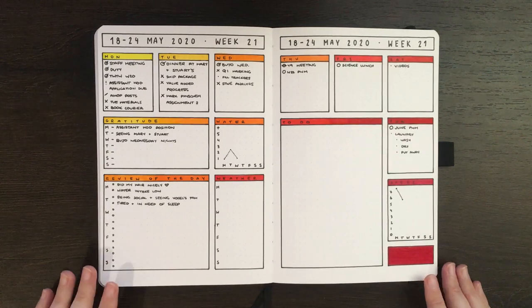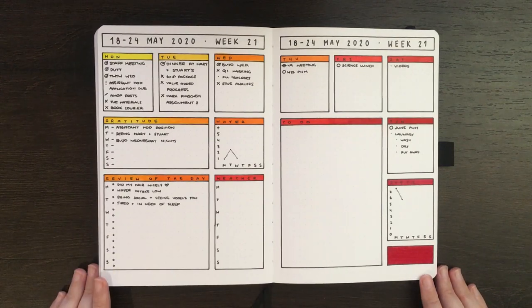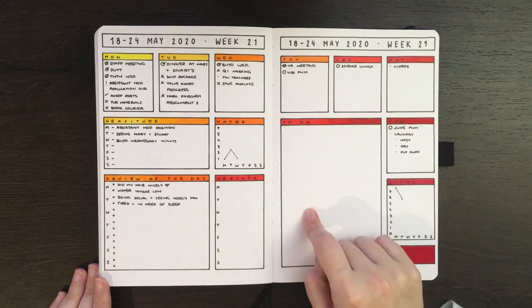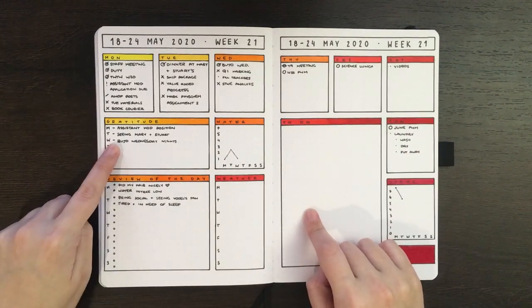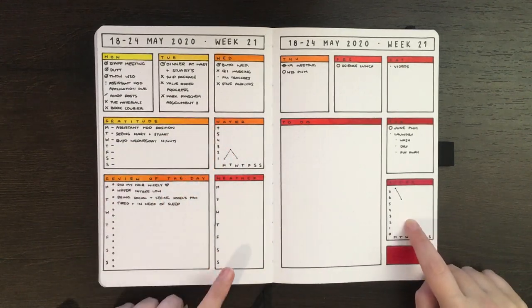So as you'll remember from last week's plan with me, this layout had a few more sections compared to a couple of the weeks prior. We have a section for each day of the week, a space for a to-do list, a gratitude log, a review of the day, a water tracker, a steps tracker and then a weather tracker.